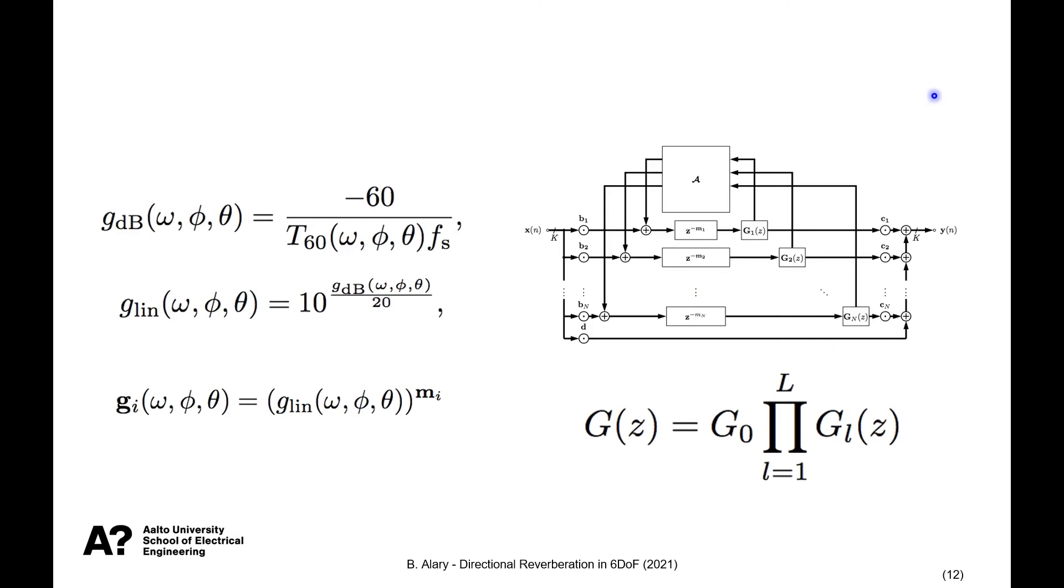And in the DFDN, the main important parameters to consider are the filters, absorption filters, located at the end of each delay line. And the way we parameterize them is using a set of direction and frequency-dependent T60 characteristics. So these T60s are converted into gains that are then raised to the power of each delay line. And this will give us a specific attenuation gain that we want to achieve after a specific time duration related to that delay line. And using these gains, we can construct an absorbing filter, in the form of multiband EQ in this case, that combined together will follow the prescribed T60s.